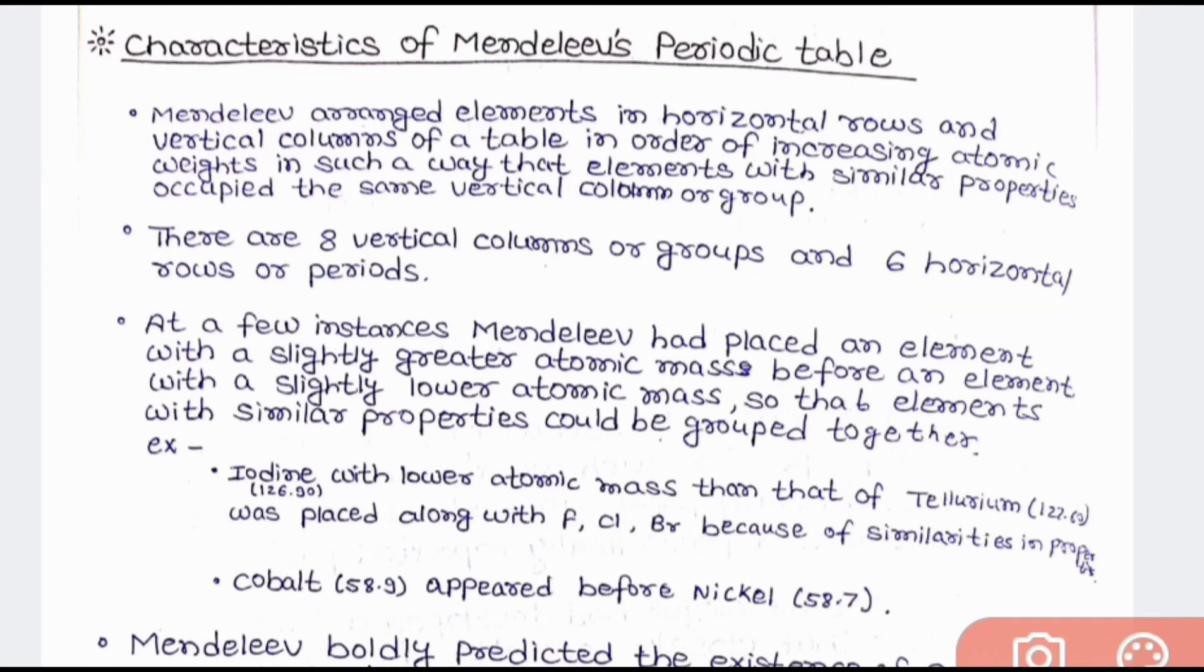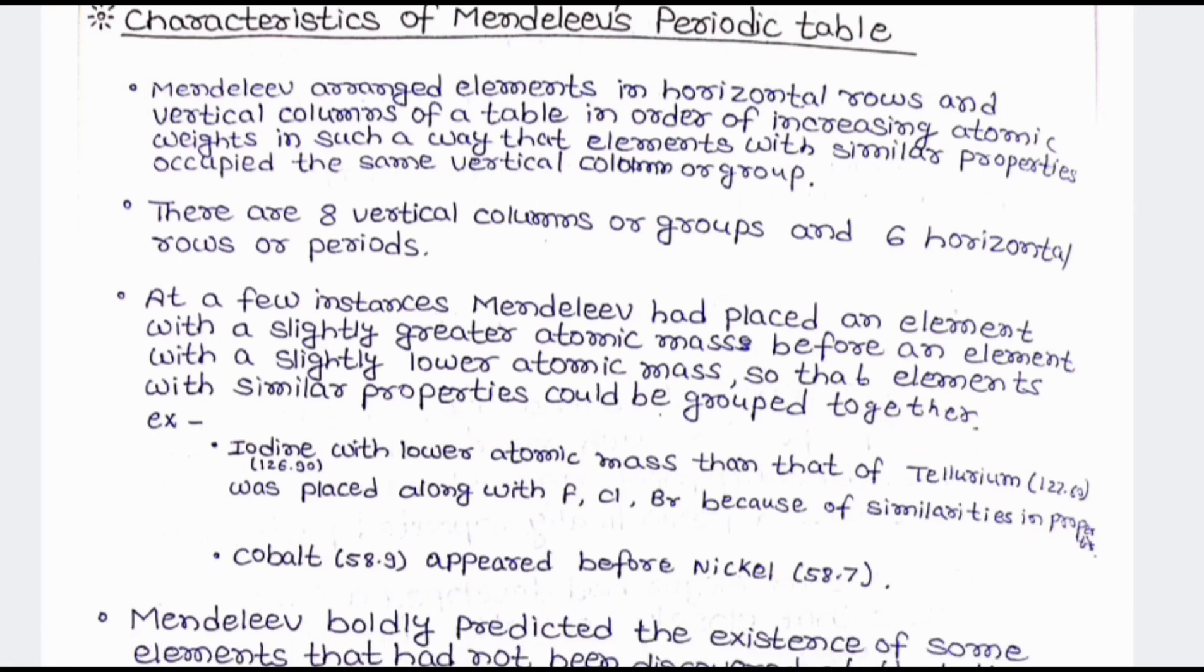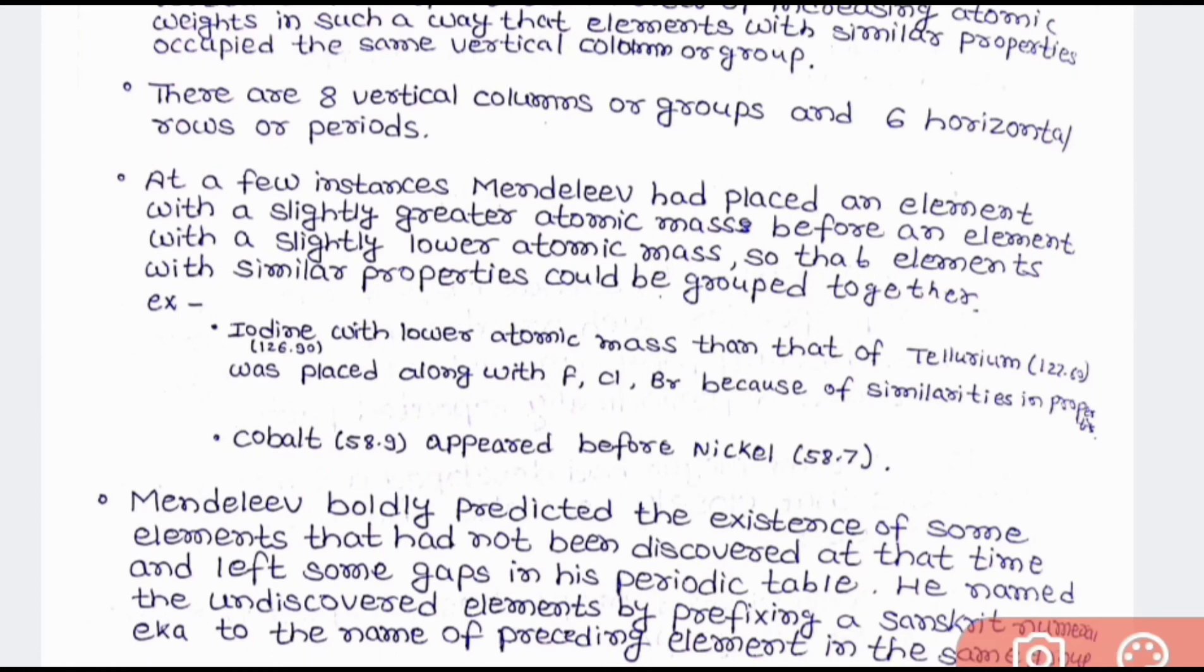And the third characteristic was at few instances Mendeleev had placed an element with slightly greater atomic mass before an element with slightly lower atomic mass. The reason behind this was elements with similar property could be grouped together. Some of the examples related to this placement was iodine with lower atomic mass than that of tellurium was placed along fluorine, chlorine, bromine because the similarity in property.